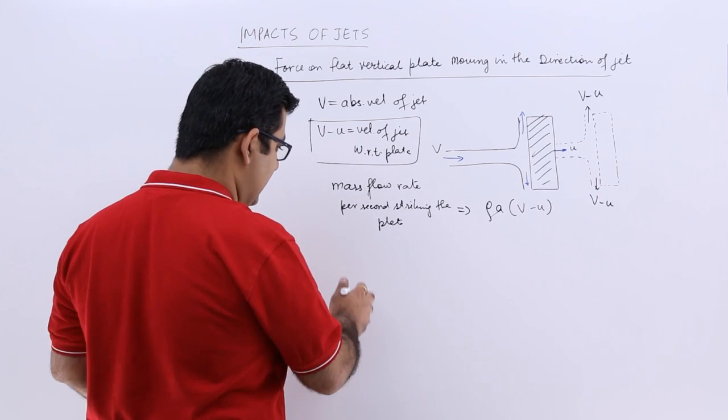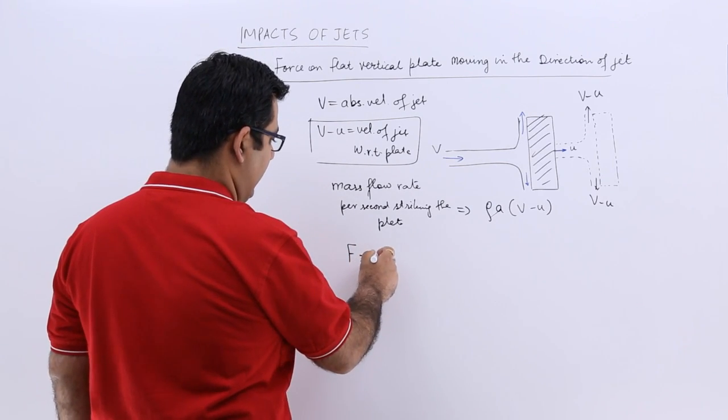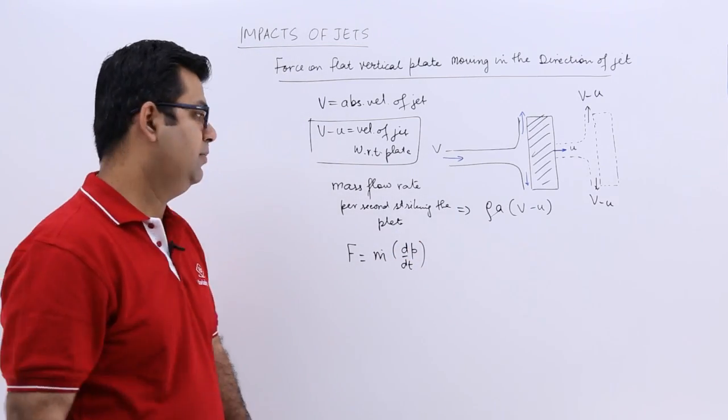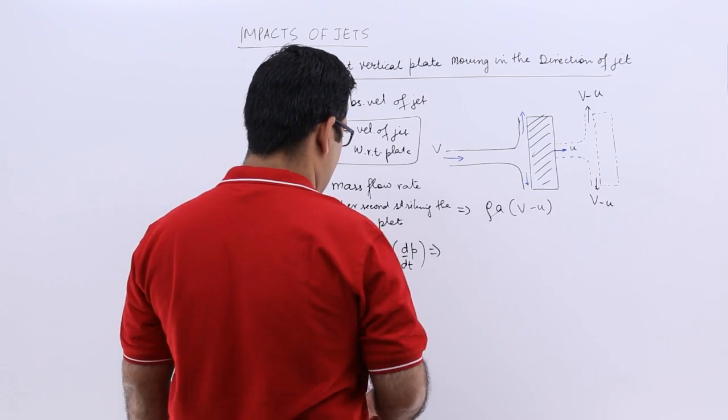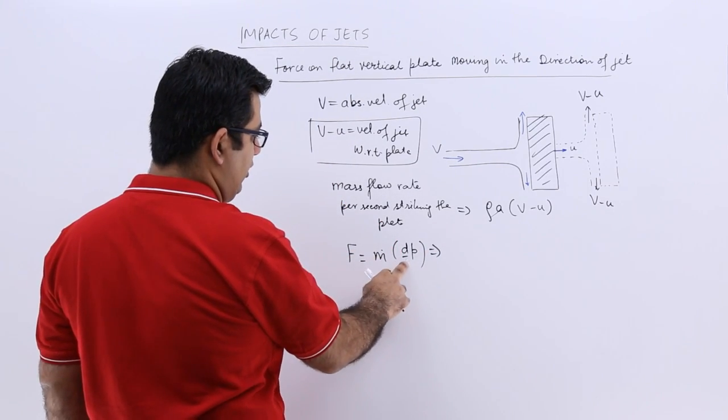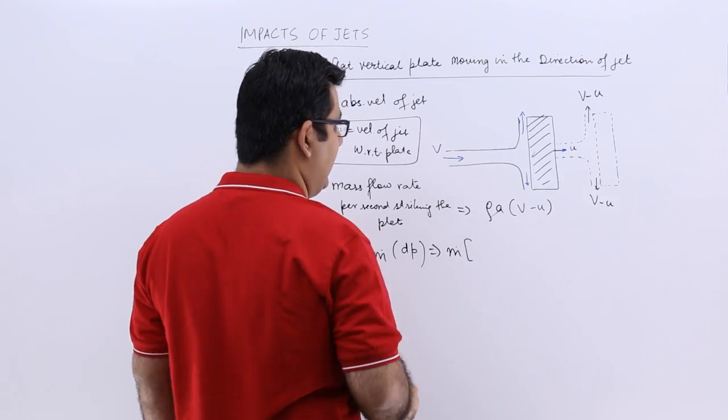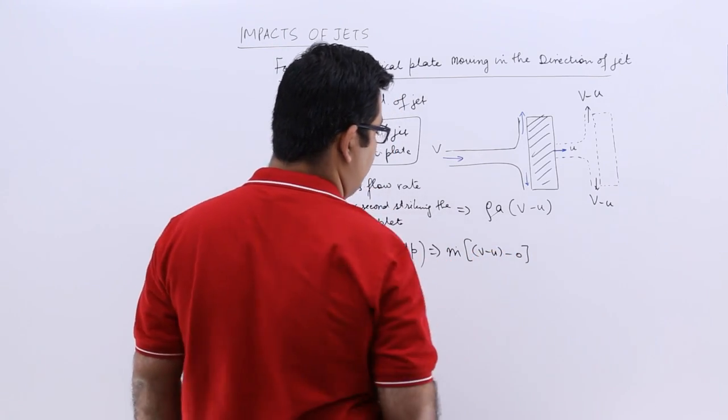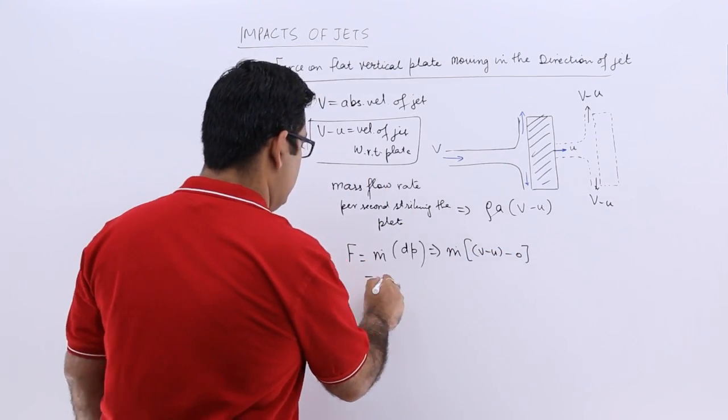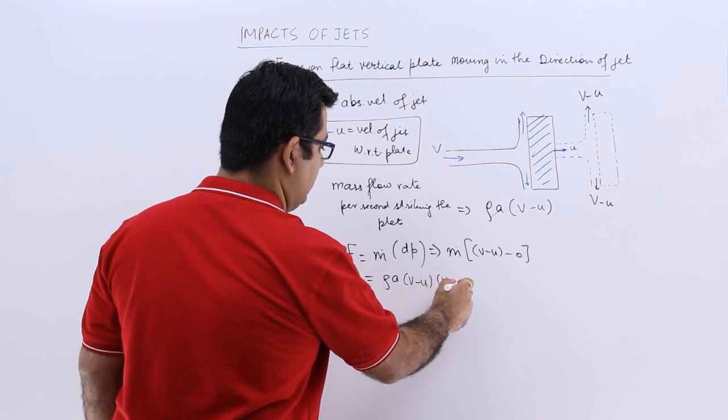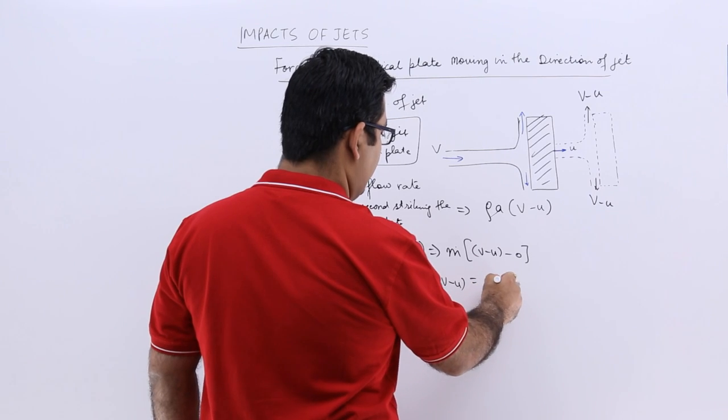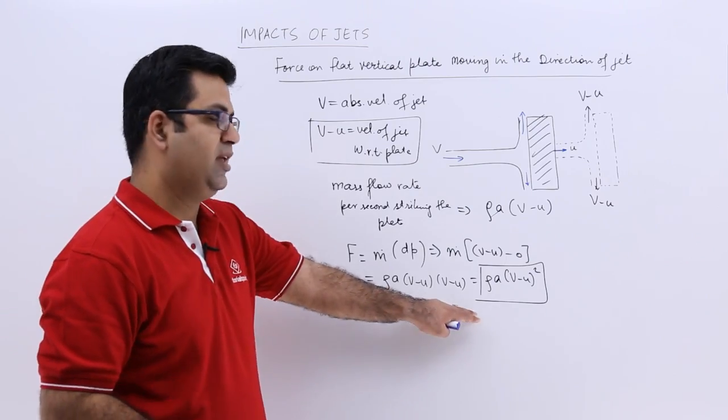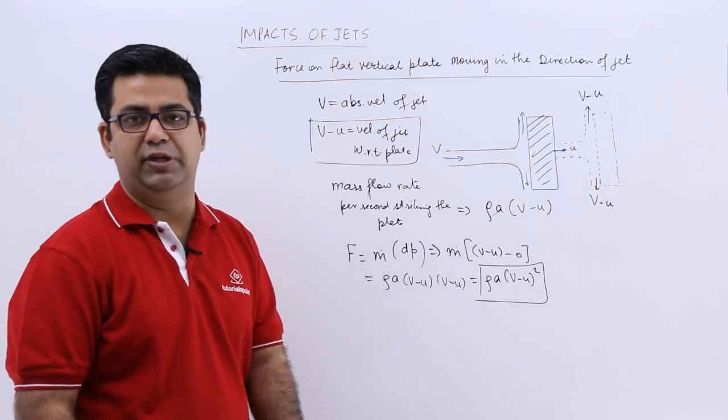Now the force exerted would be F, which is nothing but the mass flow rate and the change of momentum dp/dt. Here p is the momentum. So you have m dot times the initial velocity v minus u, and the final becomes 0. So this becomes ρa(v-u)(v-u), which gives you ρa(v-u)² - that is the force which is exerted by the jet onto this moving plate with velocity u.